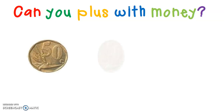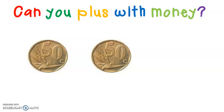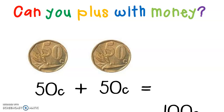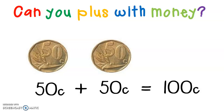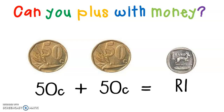Here is a 50 cents and a 50 cents. Let's add them. 50 cents plus 50 cents equals 100 cents. How else can I write 100 cents? I can write it like this: 1 Rand. And a 1 Rand coin looks like this. So 1 Rand coin is equal to 2 50 cents, and 2 50 cents are equal to 1 Rand.